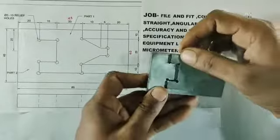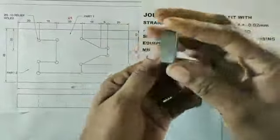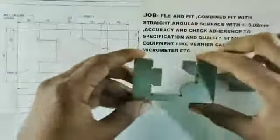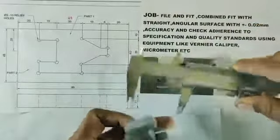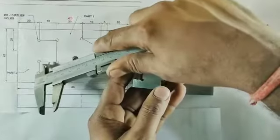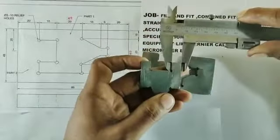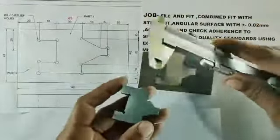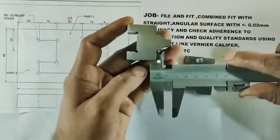Part No. 1 job and Part No. 2 job. Part number one job — as per the given drawing — dimensions: 45 mm, 40 mm, 10 mm, 10 mm, 20 mm, 10 mm, 5 mm, 8 mm.